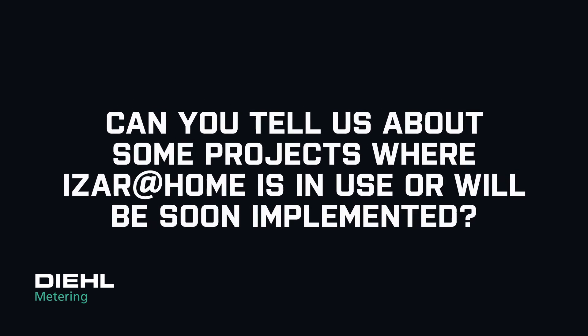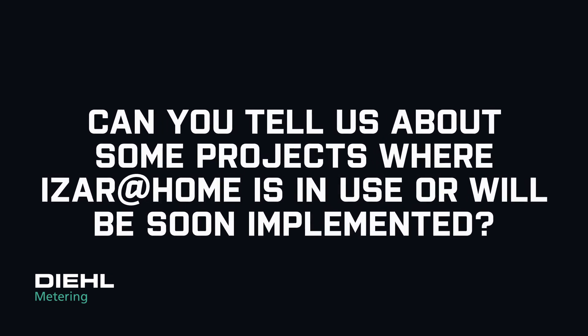Can you tell us about any projects where ISA at Home has been used or will soon be implemented? As ISA at Home is a brand new solution, we have run through different pilot projects in European countries with utilities. In autumn we realized the first live project with a utility in Denmark, Brønderslev Forsyning. They use the ISA at Home app to provide consumers information about thermal energy and water meters, as well as the possibility to monitor the heat efficiency of a household against the utility target.